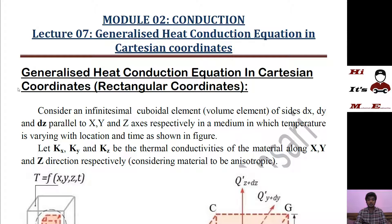Now what do you mean by a generalized equation? It means such an equation is valid in every case, in any situation when conduction occurs. It is valid in any situation. The variables will be as per the Cartesian coordinates — that is x, y, and z coordinates, which are also called rectangular coordinates. We are going to derive a generalized heat conduction equation that will describe any phenomena of conduction. If we want to derive some special equation, we will put some assumptions into this generalized equation and get a specialized equation.